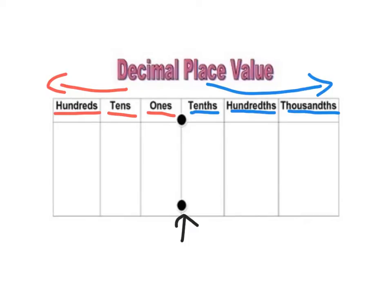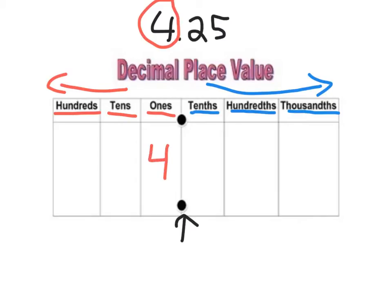So if we look back at our number 4.25, we know that our 4 is a whole number, so we can put our 4 into our ones column. The 2 would be the next behind the decimal point, so we would put that under our tenths column, and we would put our 5 in our hundredths column. So we know that 4.25 is actually 4 whole numbers, 2 tenths, and 5 hundredths.